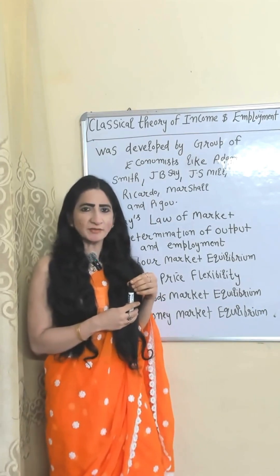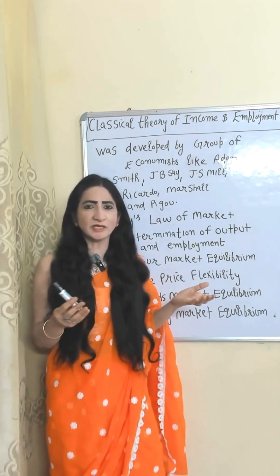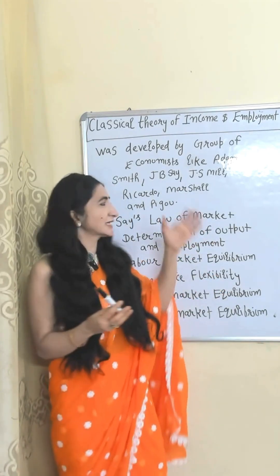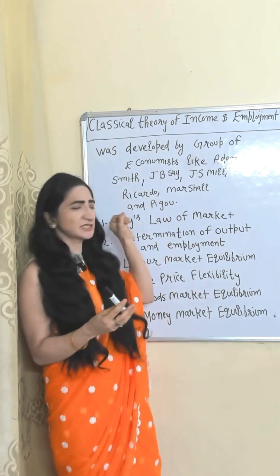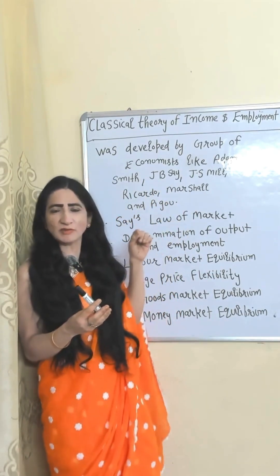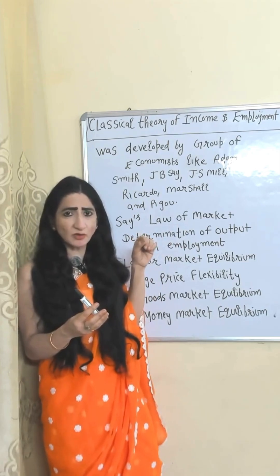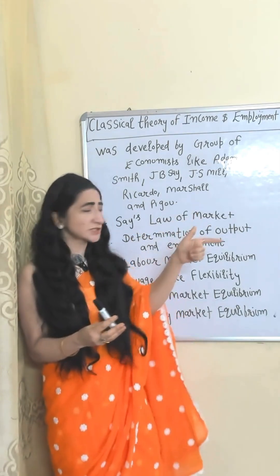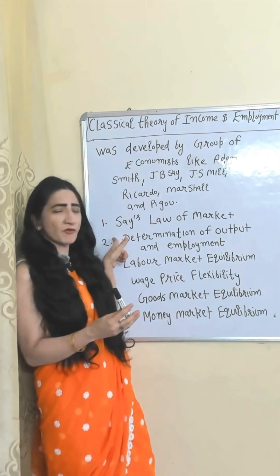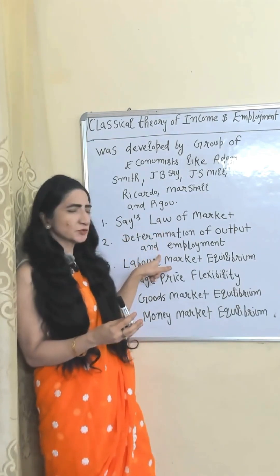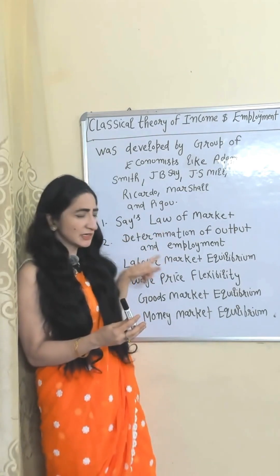The classical theory of income and employment is given by a group of economists like Adam Smith, J.B. Say, J.S. Mill, Ricardo, Marshall, and Pigou. This theory is divided into six parts: Say's Law of Market, determination of output and employment, labor market equilibrium, wage-price flexibility, goods market equilibrium, and money market equilibrium.